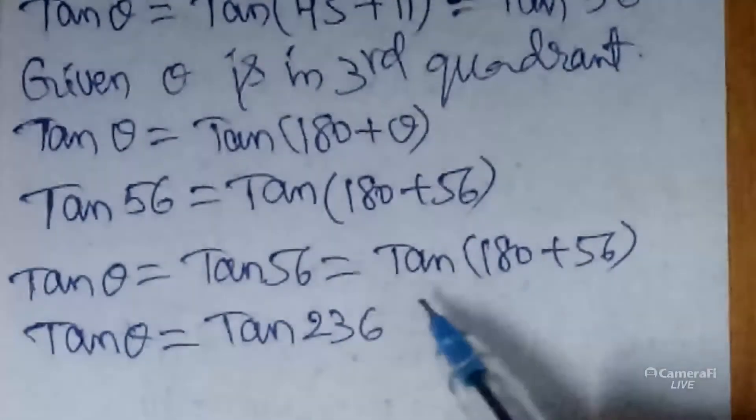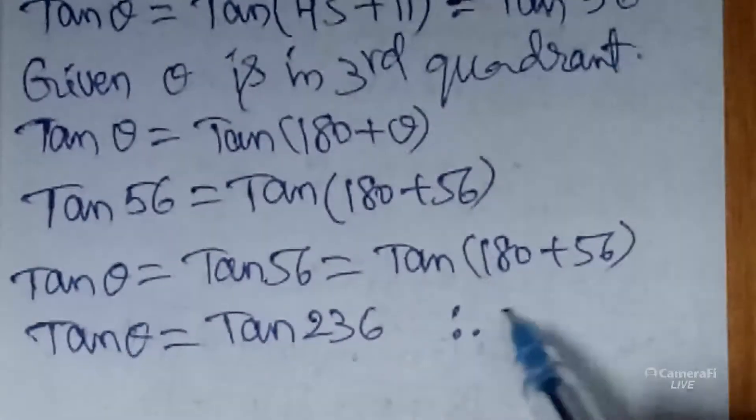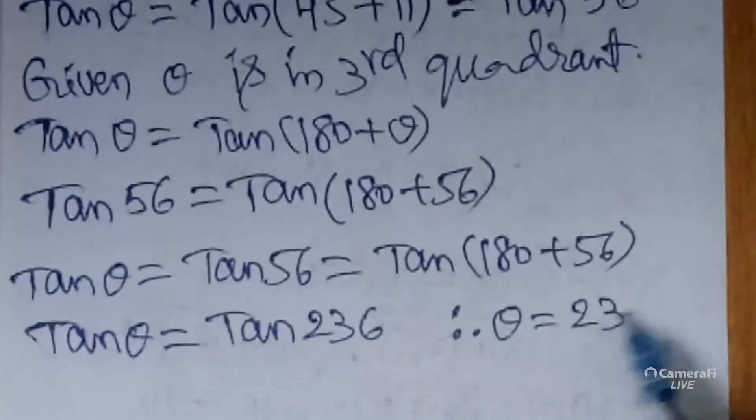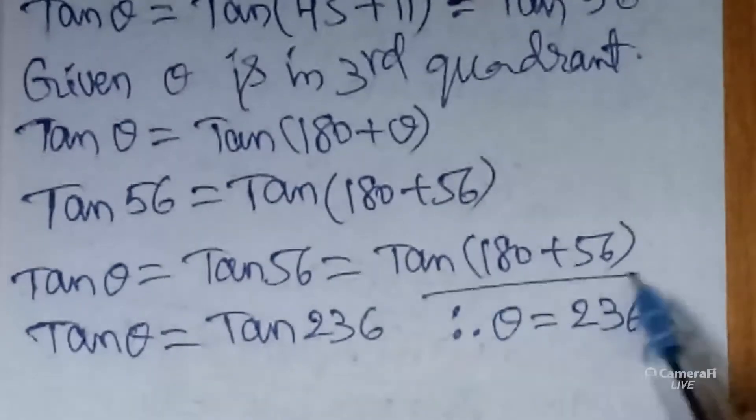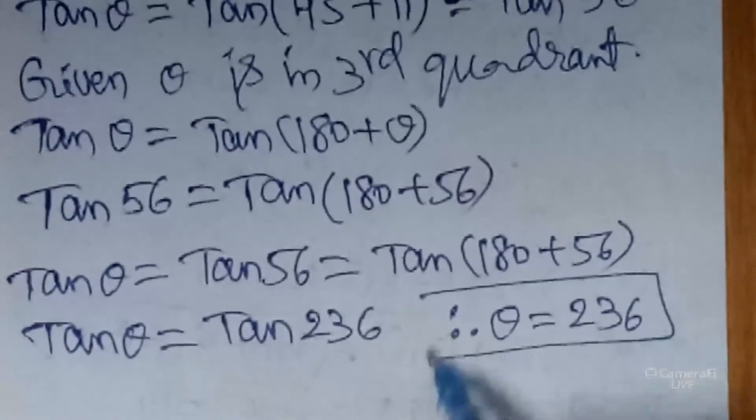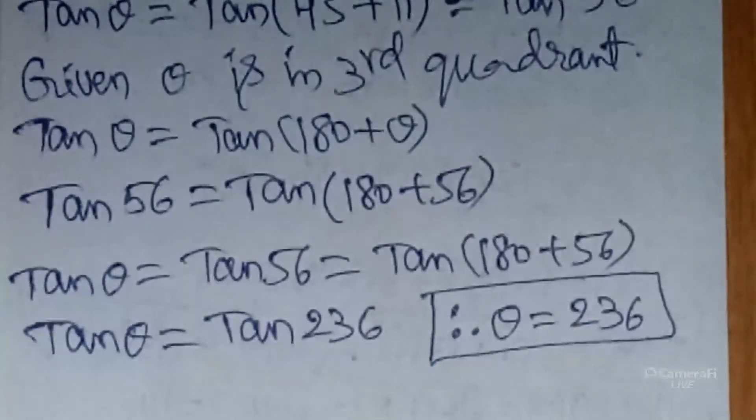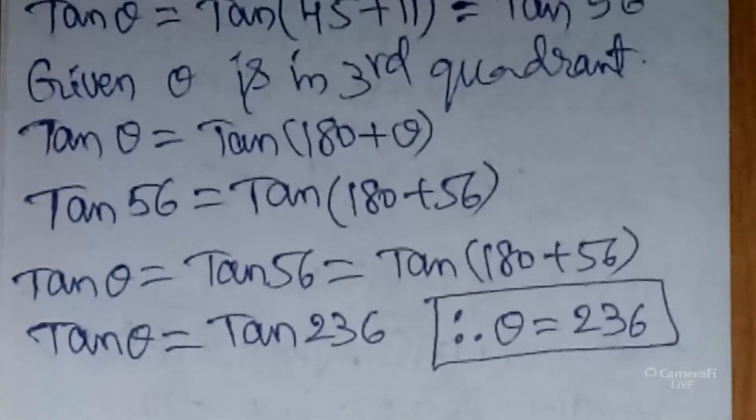tan(180 + 56) = tan 236. The tan functions cancel. Therefore, θ = 236°.